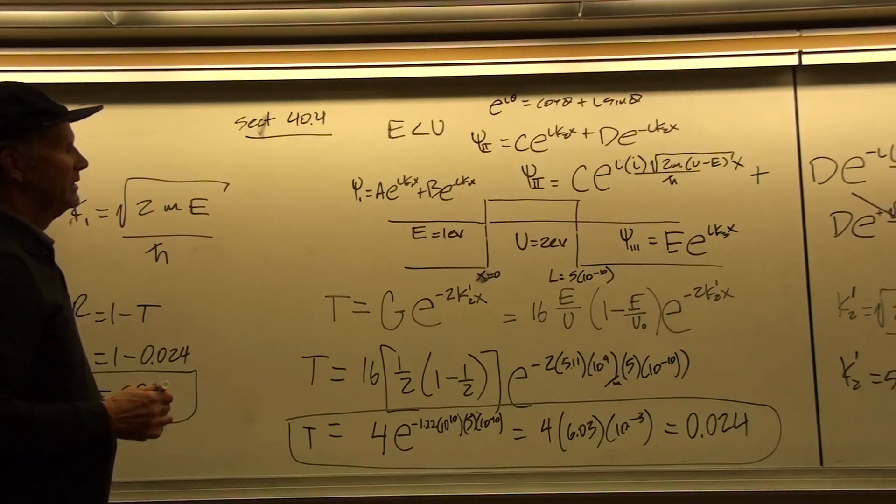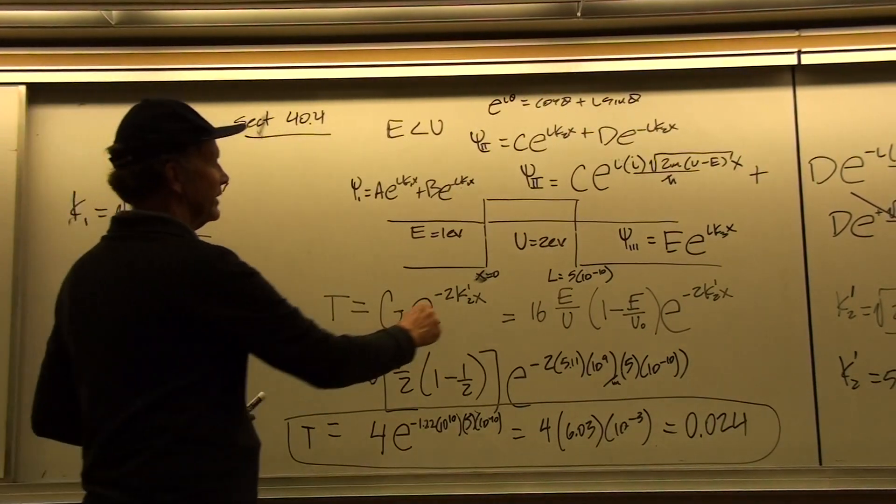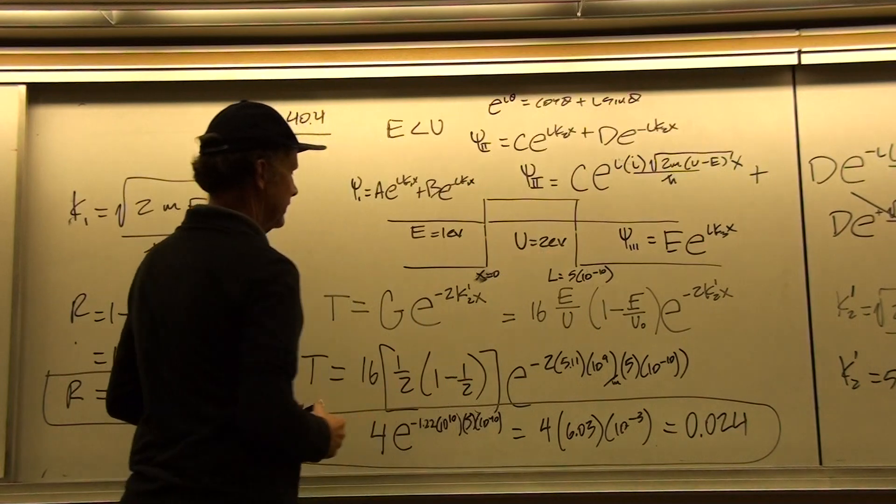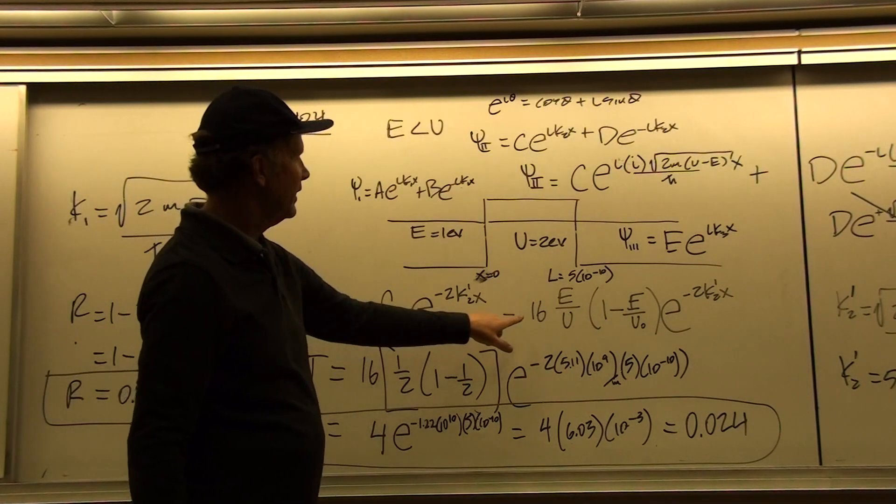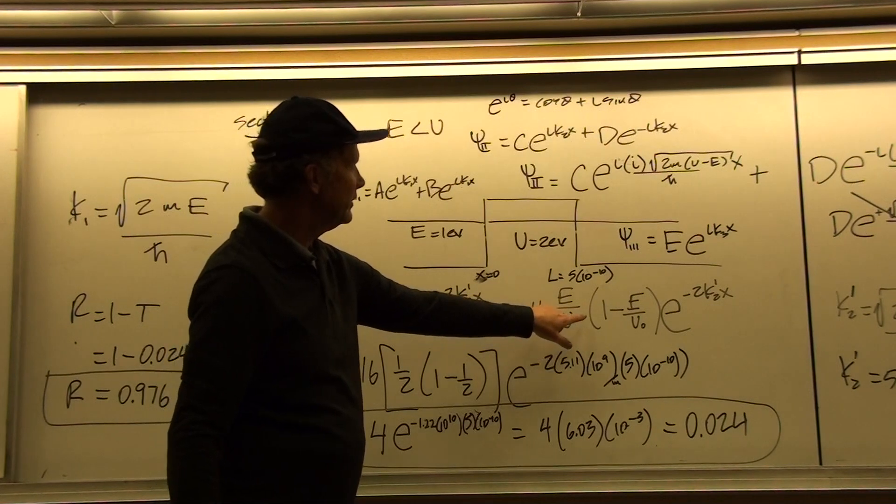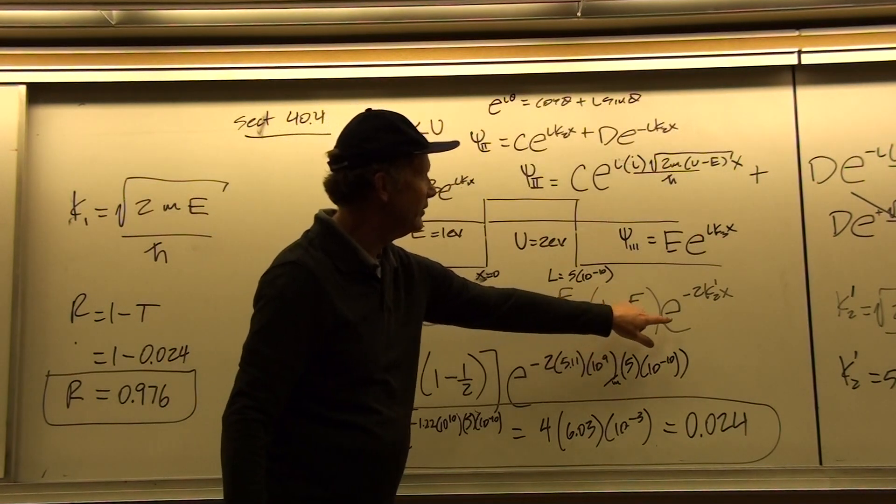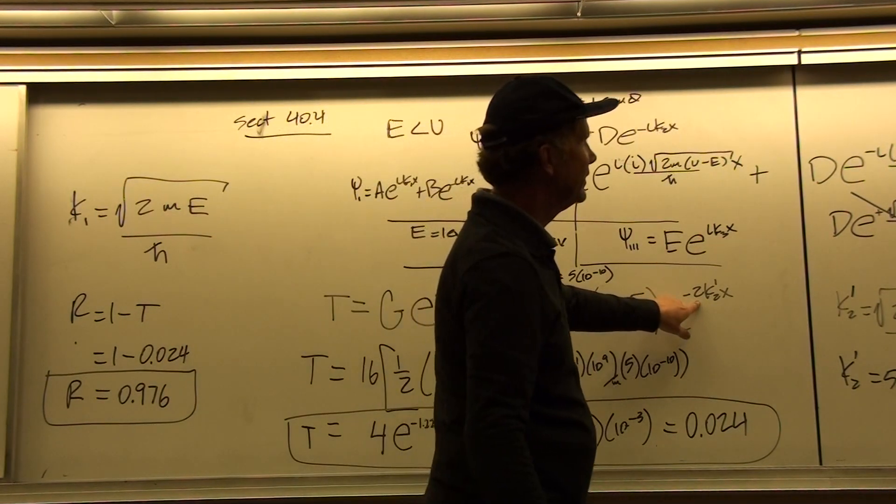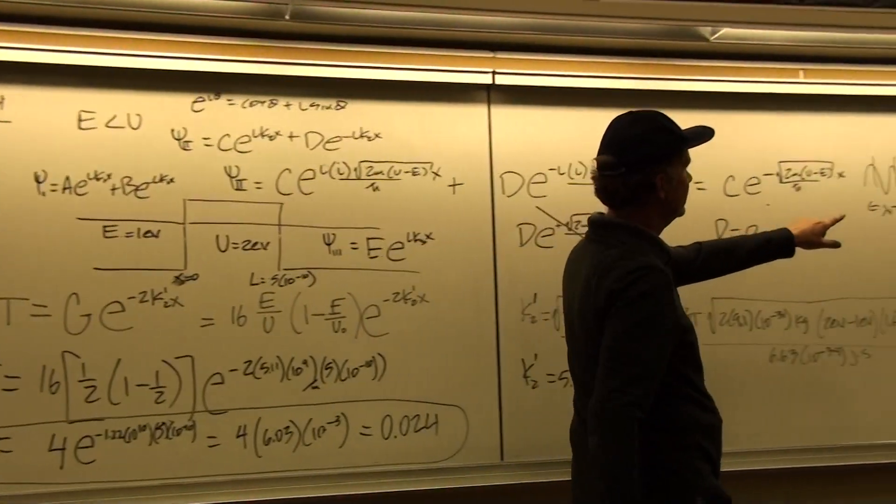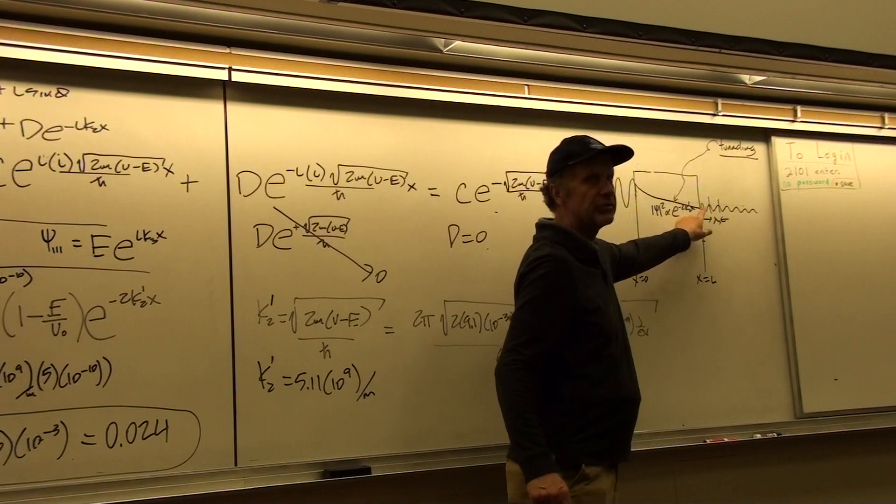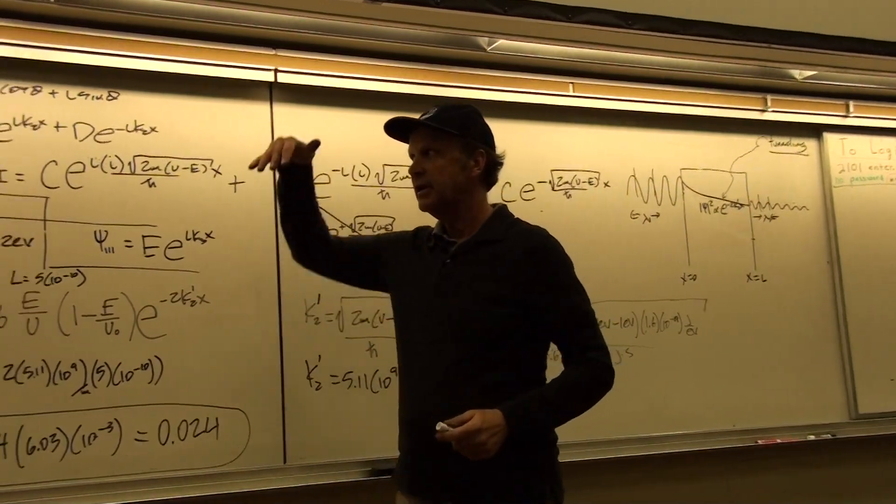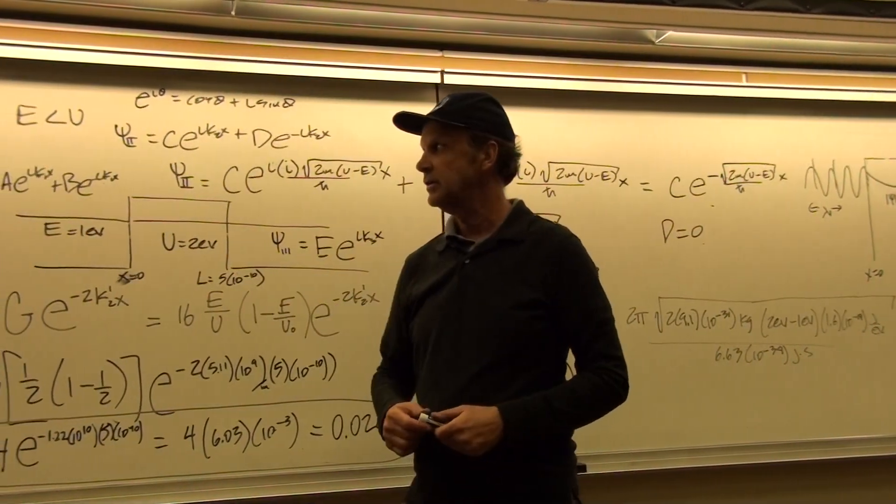and the step function is just a simple rectangular function like this. So the transmission coefficient result is equal to 16 times e over u times 1 minus e over u times e to the minus 2 k2 prime x which is what our wave function squared is proportional to in that region of exponential decay.